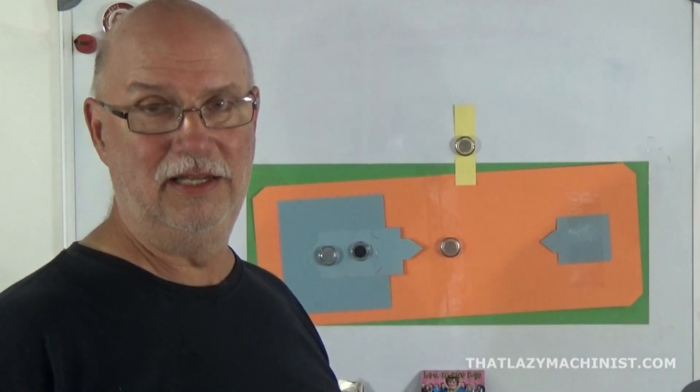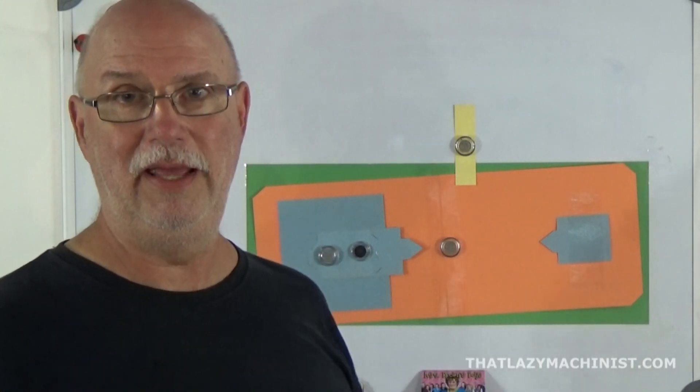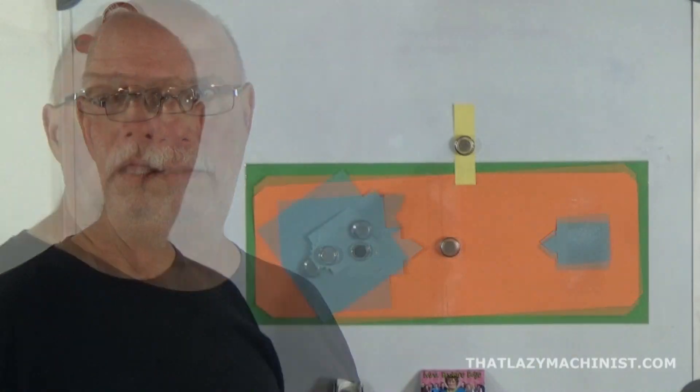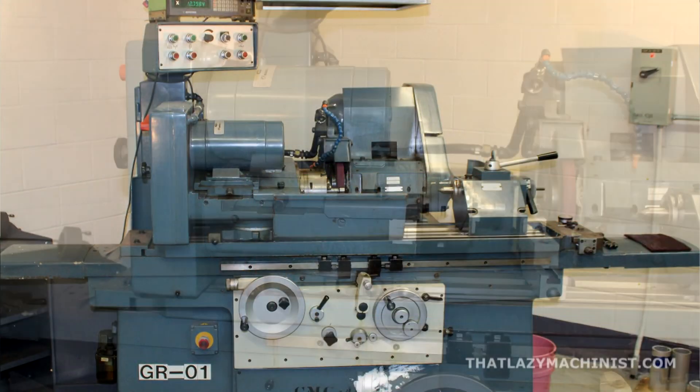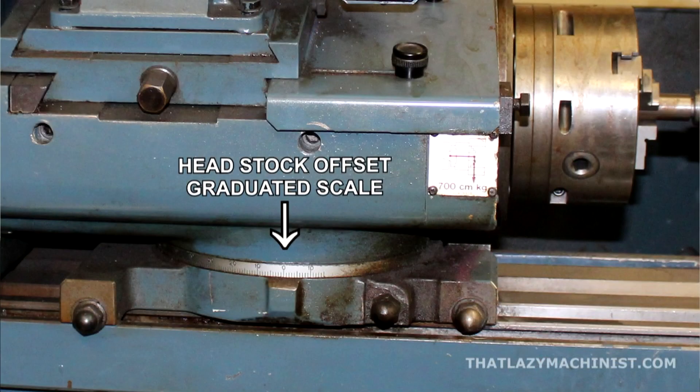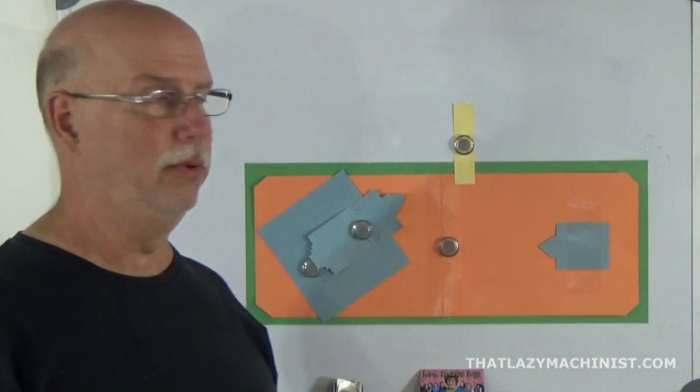Another reason why this table is adjustable is to get parts incredibly parallel as well. So if I can offset this to get a very accurate taper on a part, well I can reset it to get a very parallel part. I can also offset the headstock. And why would I want to do that?